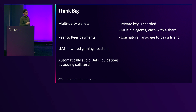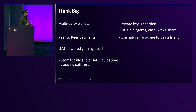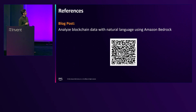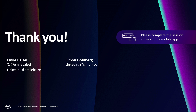My favorite Amazon leadership principle is thinking big because it always forces me to think beyond the problem I'm working on. Some ways we could expand what we've built: multi-party wallets where instead of one key in KMS, a key is split into three different shards held by different parties; peer-to-peer payments where you say 'pay Simon $5' and the agent knows Simon's wallet address; and an LLM-powered gaming assistant among other ideas. We also have a blog post and associated GitHub repository for the blockchain data analysis use case. Thank you all for your time — please complete the session survey in the mobile app.